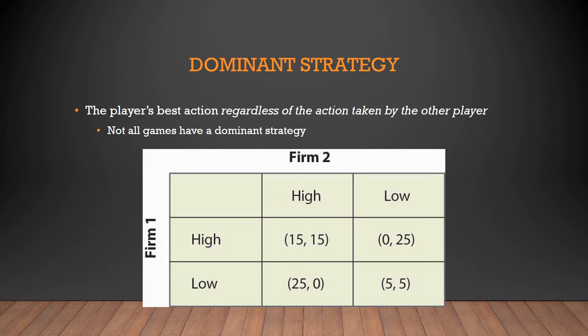What we need to do to figure out if we have a Dominant Strategy — Firm 2 can choose high or low, Firm 1 can choose high or low. If Firm 2 decides to make high output, what's the outcome going to be for Firm 1? If Firm 1 also does high output — let's make this red for Firm 1 — their payoff will be 15. If they do low, their payoff will be 25. You're going to look vertically for Firm 1. Firm 2 does high, Firm 1 does high, they get 15. Firm 1 does low, they get 25. 25 is better than 15, so that's a mark in the box for low.